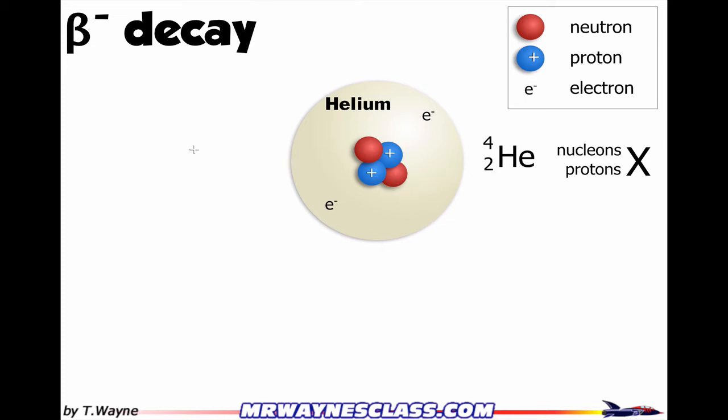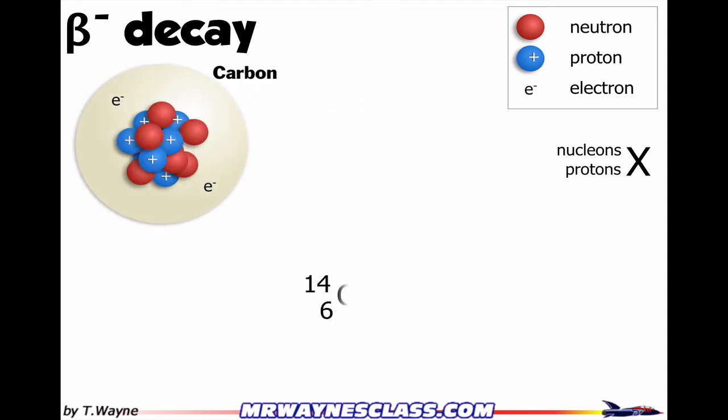Now let's look at a beta minus decay. I'm going to start by looking at carbon-14. I've got 14 nucleons, you can't see them all in my model, and six protons of the 14 nucleons. C is the symbol for carbon, so 14 over 6, C.